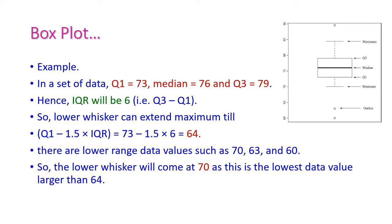Let us see one example to easily understand the concept. In a dataset, Q1 is 73, median is 76, Q3 is 79. The IQR — interquartile range — is 6, that is Q3 minus Q1: 79 minus 73 equals 6.